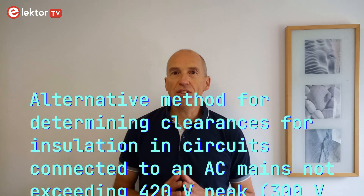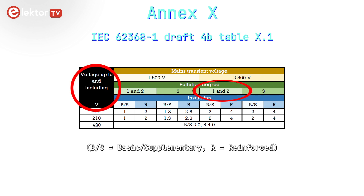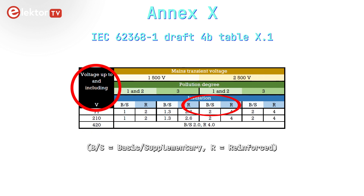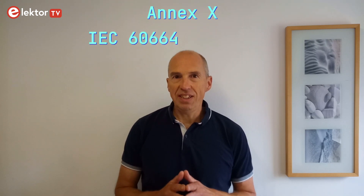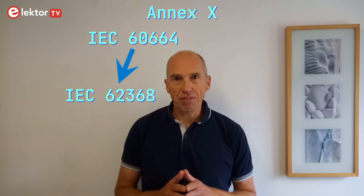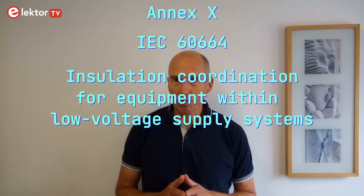There is also an Annex X, which provides an alternative method for determining clearances for installations in circuits connected to an AC mains not exceeding 420 volts peak or 300 volts RMS. All things equal, using the data from this Annex we find for reinforced insulation a clearance distance of 4 mm instead of 3.6 mm, and for functional or basic insulation 2 mm instead of 1.8 mm. It seems that Annex X allows equipment that already conforms to IEC 60664 to also conform to IEC 62368. Making the clearances the same as the creepage distances determined for my scenario, they also comply with Annex X, so I am probably good.